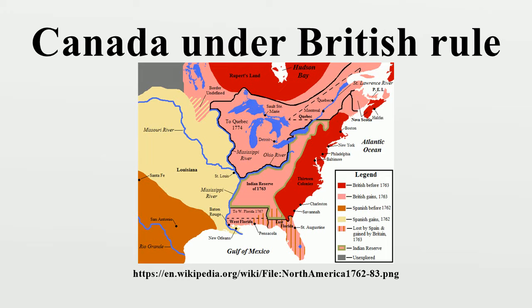Several major events took place during the era of British rule that affected what is generally referred to as British North America, including the American Revolution, the War of 1812, and the Rebellions of 1837. British imperial control of Canada did not end in 1867. A number of colonies of British North America, such as Newfoundland and British Columbia, and large territories such as Rupert's Land, initially remained outside of the newly formed Federation.